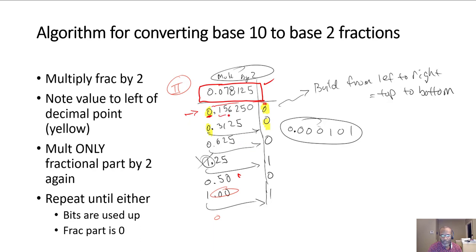Now you will double only, and always only, fractional components. So the 0.15625 becomes 0.3125. Once again, the whole number component is a 0, so you note that that's a 0.